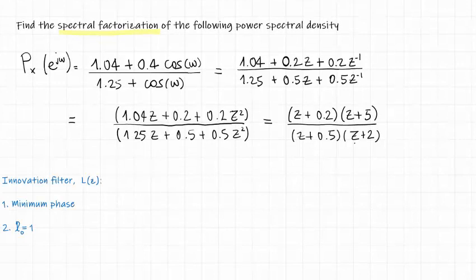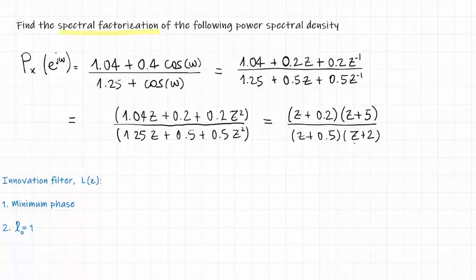Now, let's recall for a second the constraints we have for our innovation filter. And these are that the filter is minimum phase and the first filter coefficient is equal to 1.